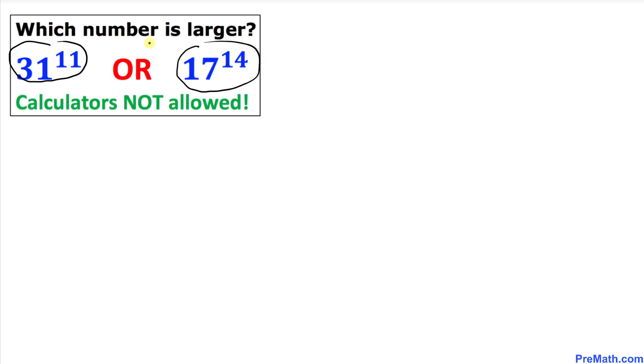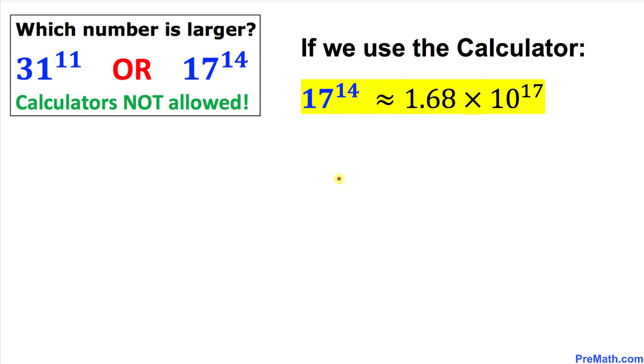And here's the caveat - we are not supposed to use calculators. Let's go ahead and get started with the proof. If we were allowed to use calculators, 17^14 is approximately equal to 1.68 × 10^17, and moreover 31^11 is approximately equal to 2.54 × 10^16.